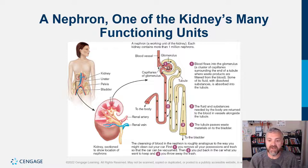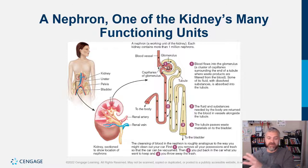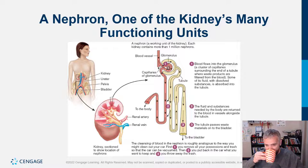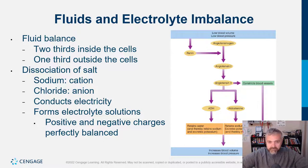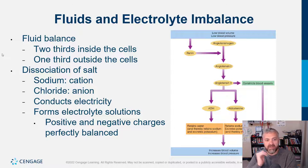Cleansing blood in the nephron is analogous to cleaning out your car: first you remove all your possessions and trash so the car can be vacuumed, then you put back what you want to keep and throw away the trash. Both good and bad substances come out, good comes back in, bad stays out. Fluid and electrolyte imbalances are important — fluid balance is how much water you take in versus out, and electrolyte imbalances impact where our water is.